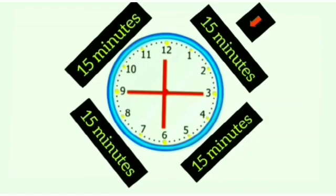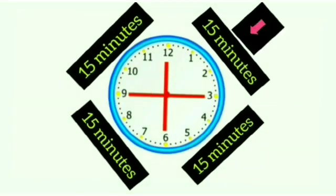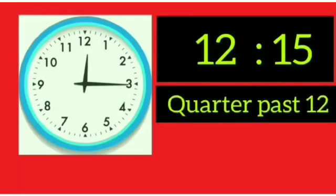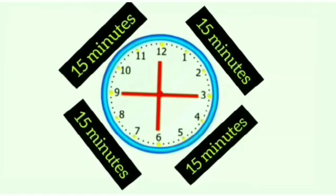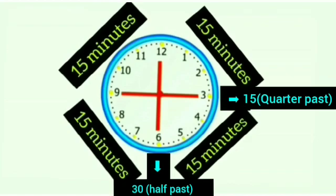Students, if the time is 15 minutes more than an hour, it means the minute hand is pointing to 3. The time of the first 15 minutes will be shown as 'quarter past.' For example, look at this clock — it is showing quarter past 12, so we will write it as quarter past 12.